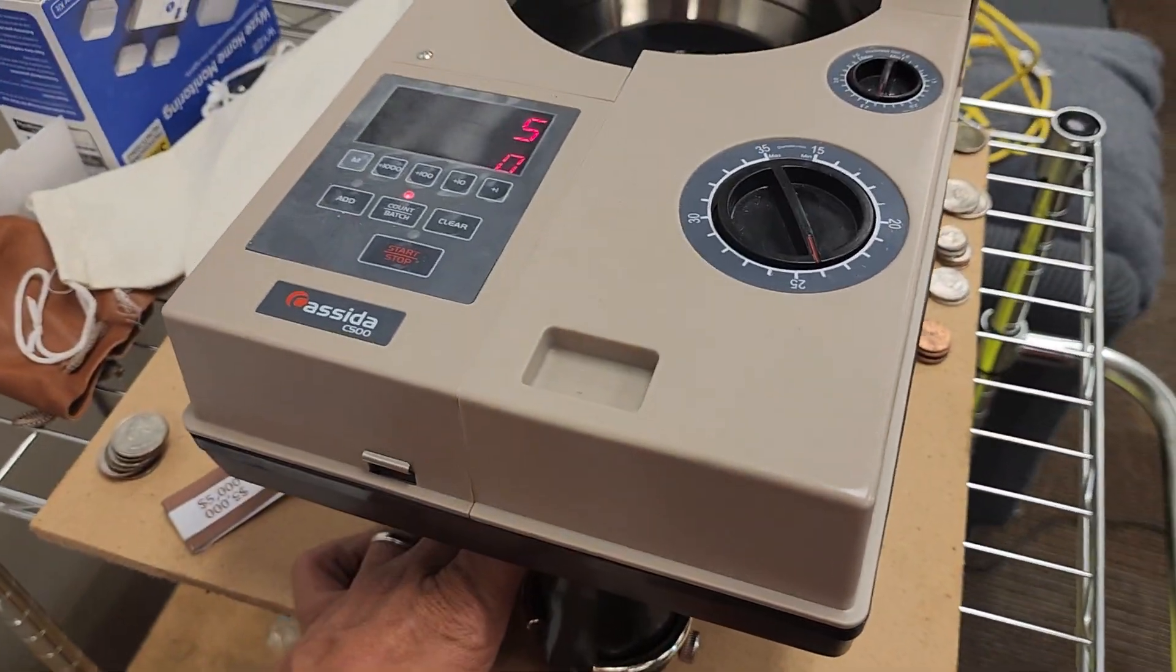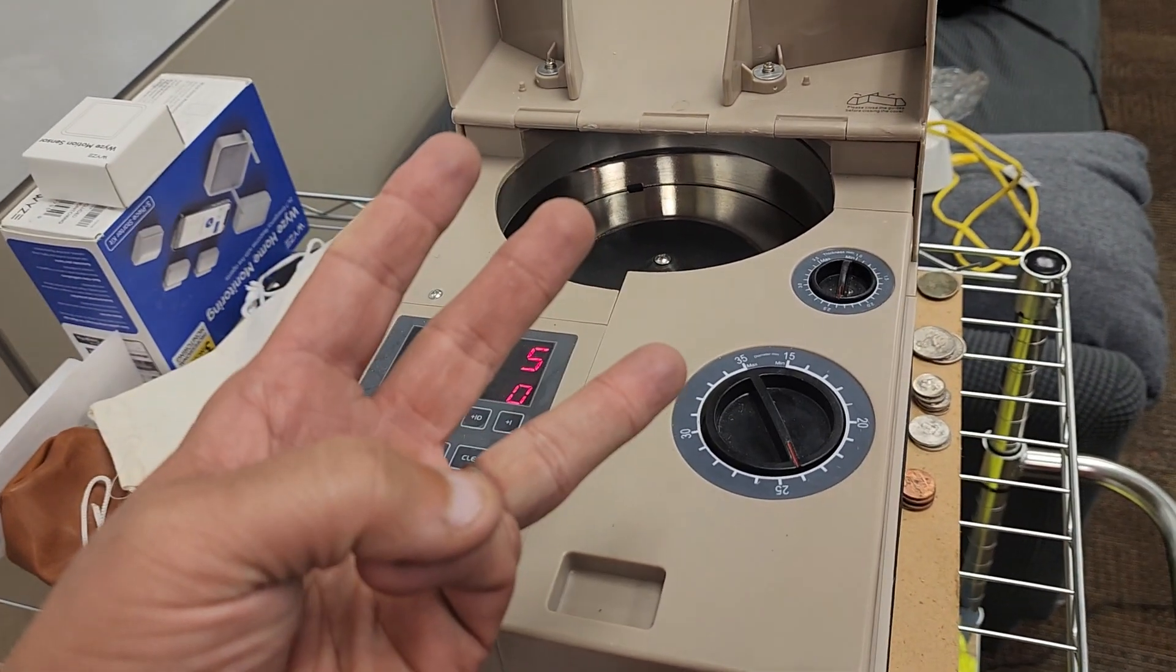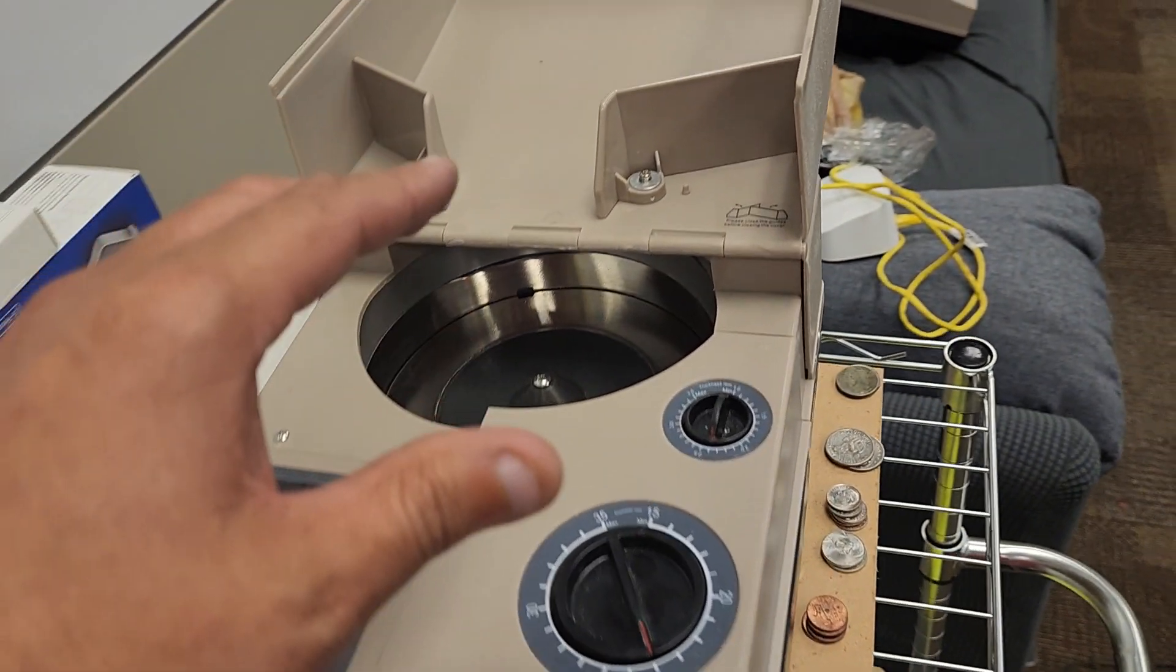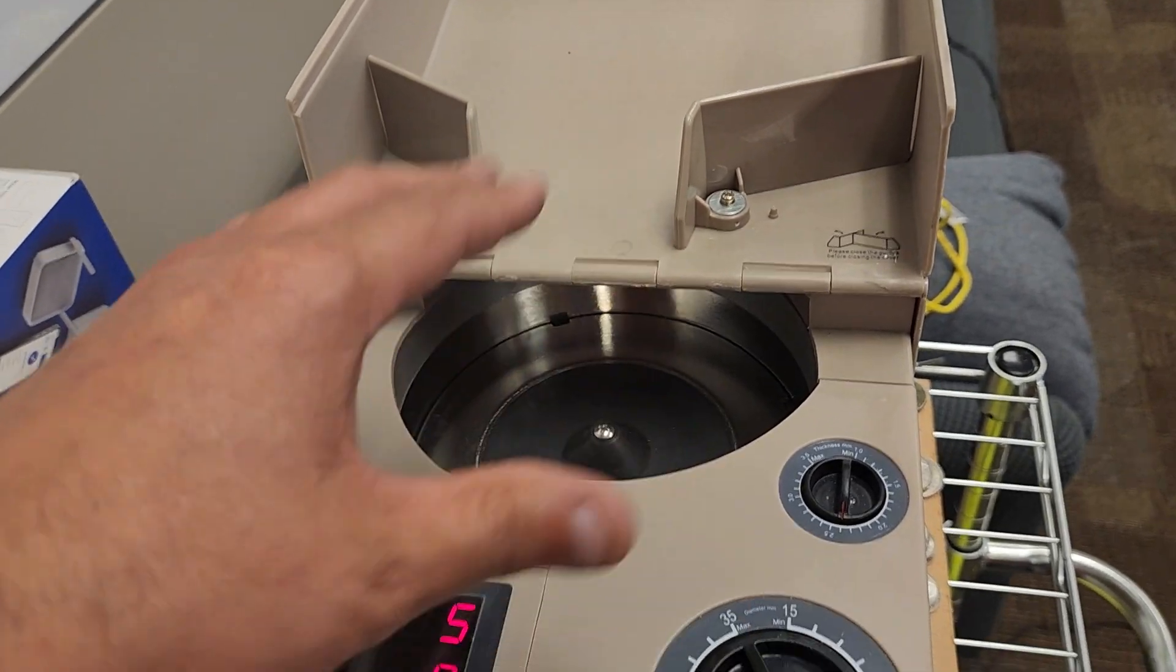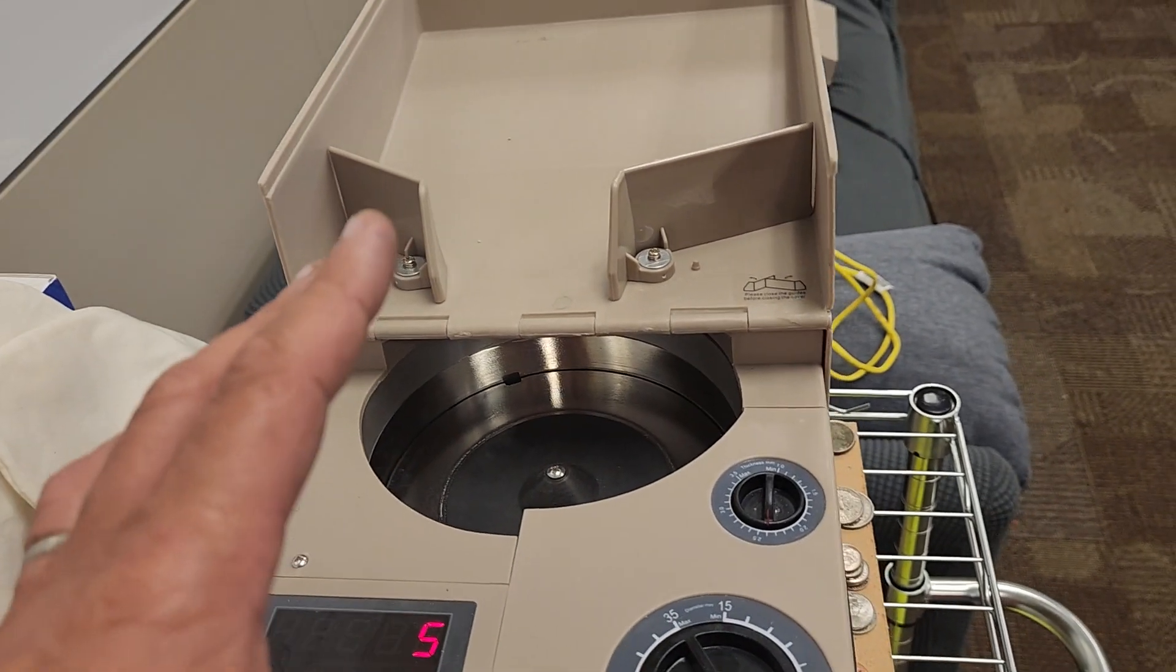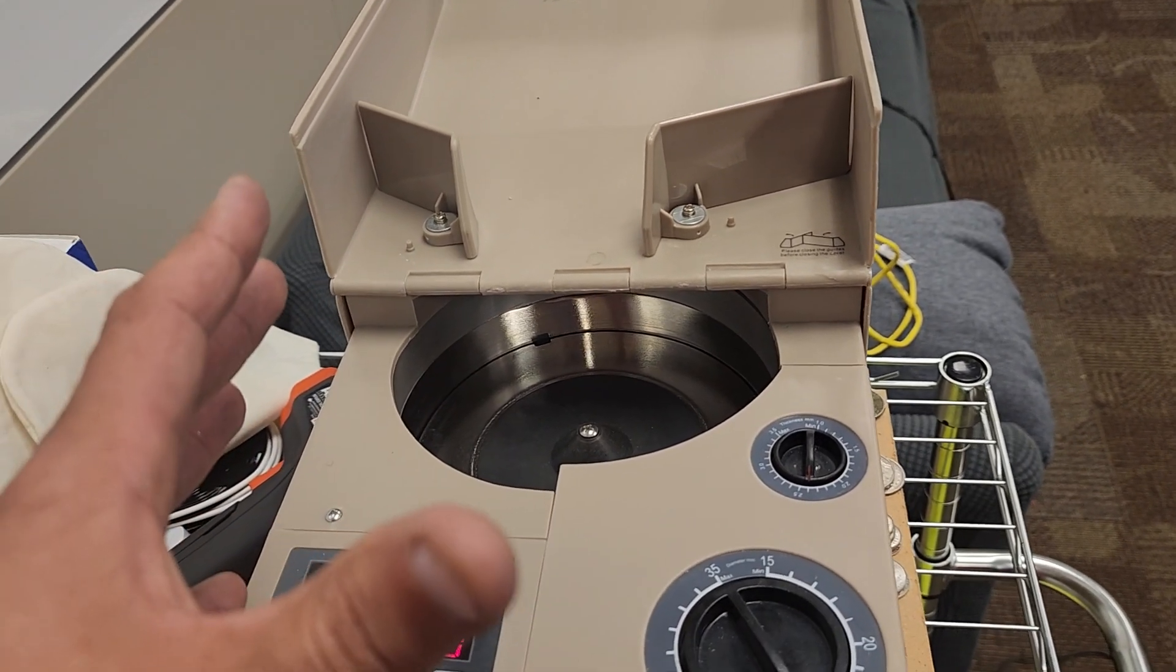And that's how I count three separate denominations at one time, because it's easier for me to buy three $500 machines than is for me to buy one $20,000 machine. And the thing is the C550 or this C500, it will sort probably $1,000 worth of coins in three minutes.